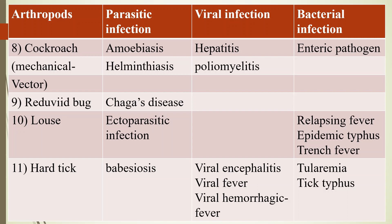Eleventh, hard tick — causes parasitic infection babesiosis, viral infections like viral encephalitis, viral fever, and viral hemorrhagic fever, and bacterial infections like tularemia and tick typhus. Tularemia is rabbit fever, caused by the bacterium Francisella tularensis.